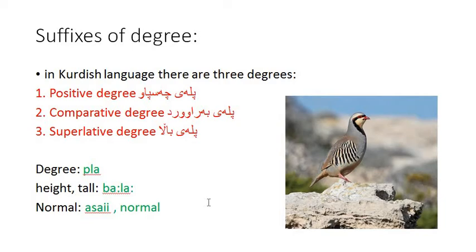Then we have the superlative degree, which is when something is at the top among others. For example, the Nile is the longest river in the world — from all rivers, the Nile is the longest. An adjective of an object is on top of all others. This doesn't mean it must be positive; it can be negative as well, but it's on top of the others.